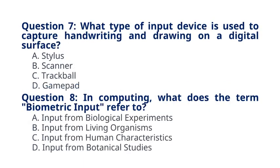Question 7: What type of input device is used to capture handwriting and drawing on a digital surface? A. Stylus. B. Scanner. C. A trackball. D. A gamepad. The correct answer to question 7 is option A: Stylus. A stylus is a pen-like device used for writing or drawing on digital screens.